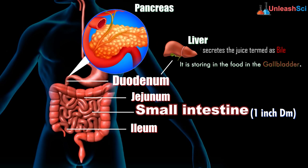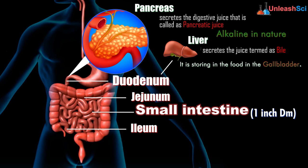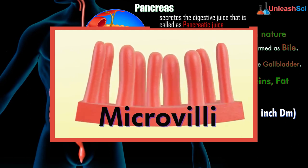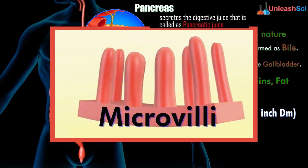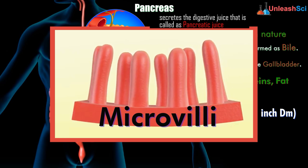Coming to the pancreas — the pancreas is a leaf-like structure and it also secretes a digestive juice called pancreatic juice, which is alkaline in nature. So the environment in the stomach is acidic, but in the small intestine it is alkaline. All the juices act in the duodenum, where there is digestion of carbohydrates, proteins, and fat. Maximum absorption occurs here because it contains microvilli — finger-like projections richly supplied with blood vessels.